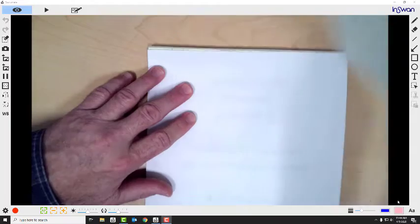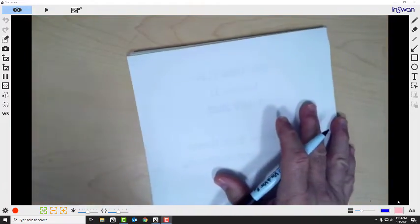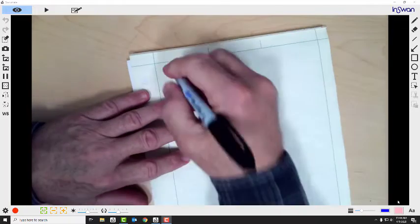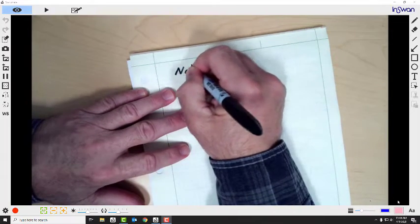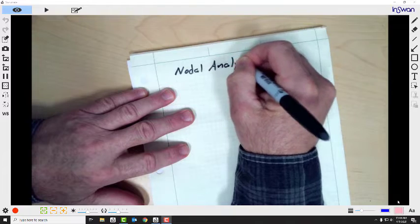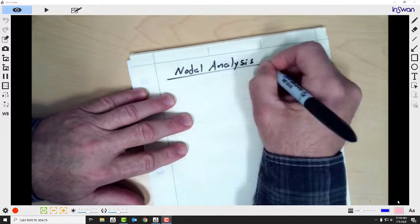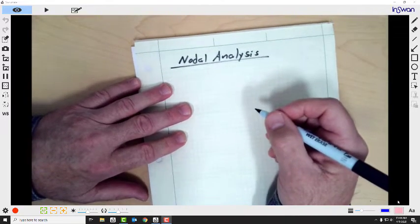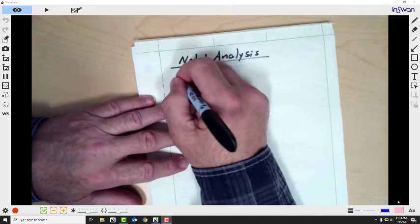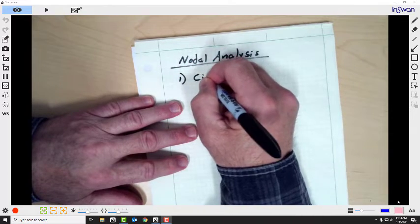Then we have nodal analysis. And in nodal analysis, what is step one? We'll circle the nodes.